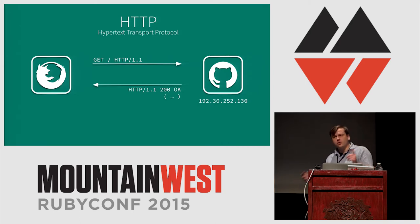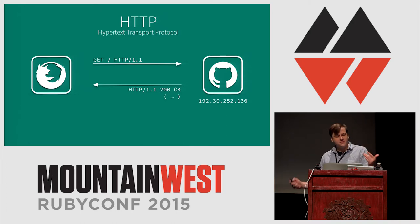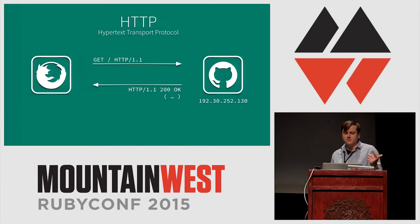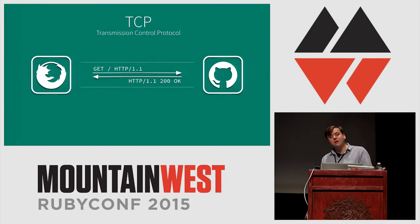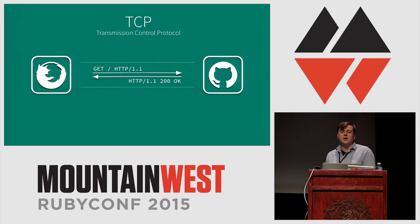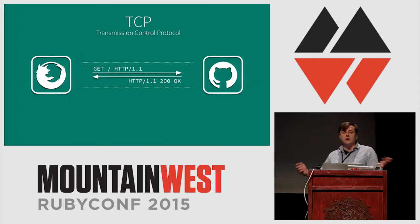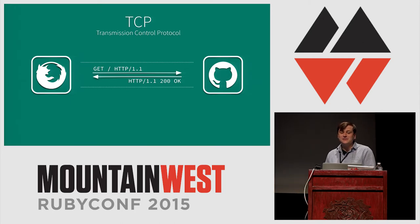We know how we're going to structure the conversation with GitHub to get our blobs of text, but how do we actually get messages back and forth between our browser and GitHub? For that we need a connection, and that's where TCP comes in. TCP establishes a connection between two nodes on the internet and allows them to exchange text — it's basically just a two-way pipe for slinging messages back and forth.